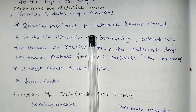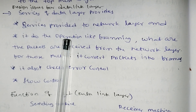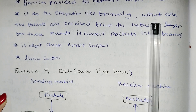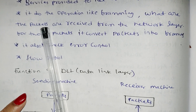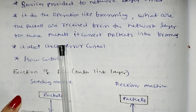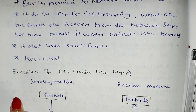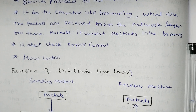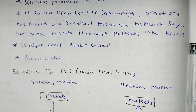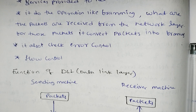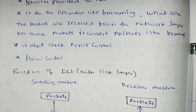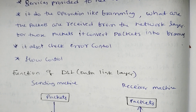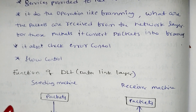Service is provided to the network layer. The data link layer provides services to the network layer and performs operations like framing — taking packets received from the network layer and converting those packets into frames. Then it performs error control. Flow control is also handled — the flow can be fast or slow.